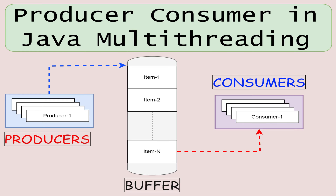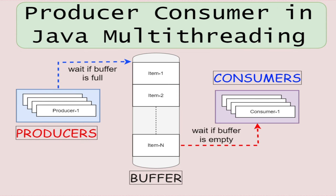The second thread is a consumer. Its job is to consume the data one component at a time, which includes removing that element from the buffer as well. Both these threads will run concurrently. We have to make sure that the producer won't try to add any data into the buffer if the buffer is full, and the consumer won't try to remove data from an empty buffer.